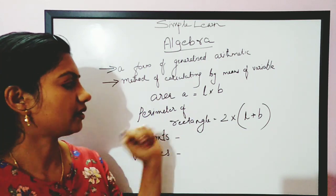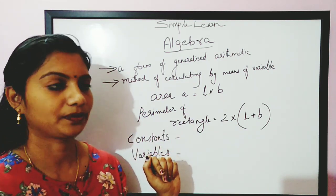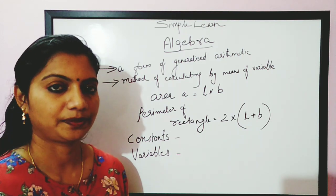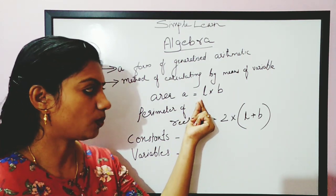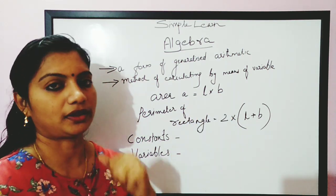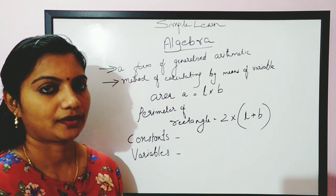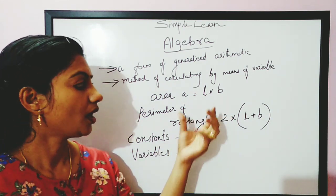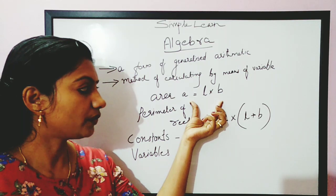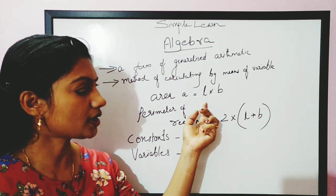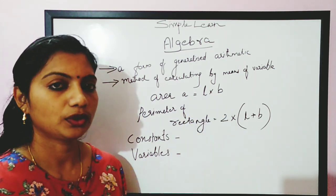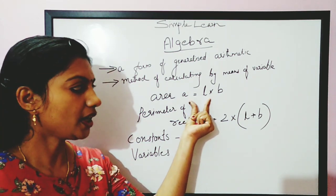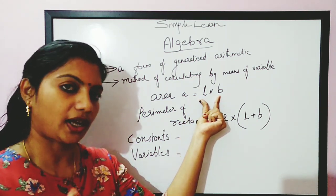Let's look at the area of a rectangle. A is equal to length into breadth. This is a generalized arithmetic. Instead of this, if we say 4 is equal to 2 into 2, that's not generalized. A equal to L into B is generalized.